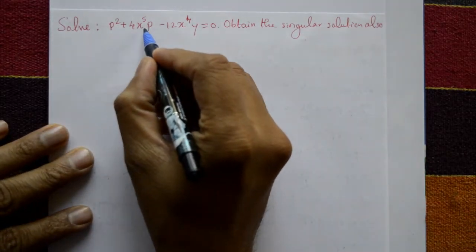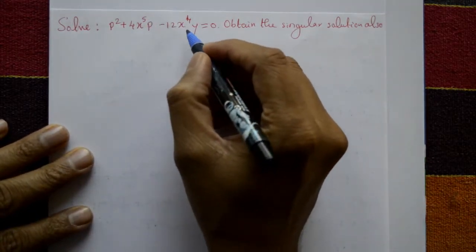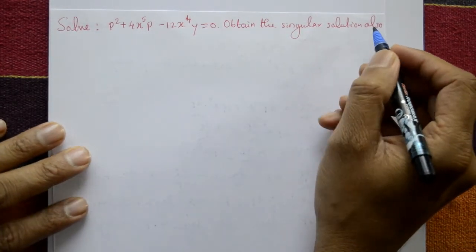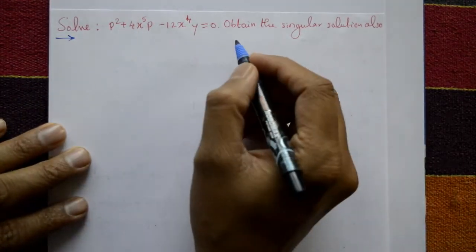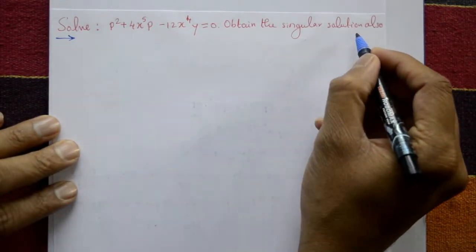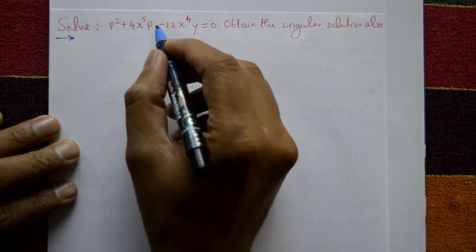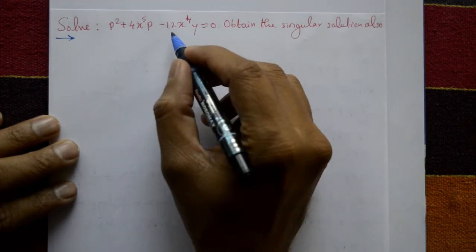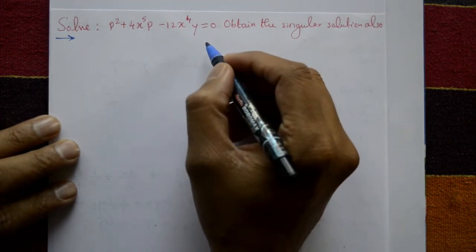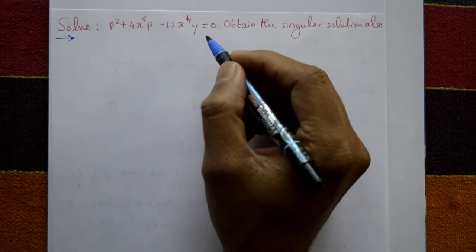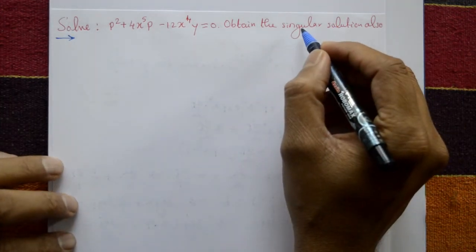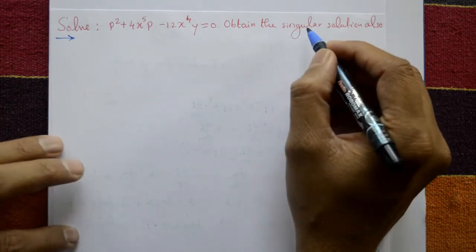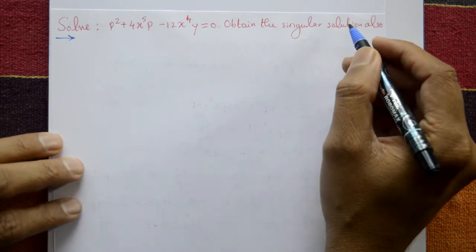Solve p squared plus 4x to the 5 into p minus 12x to the 4 times y equals 0. Obtain the singular solution also. This is a differential equation — find the singular solution. First check if it is possible to express y, p, or x explicitly. Then separate the variables and integrate to get the general solution. Differentiate the general solution with respect to the constant partially, then get the singular solution.